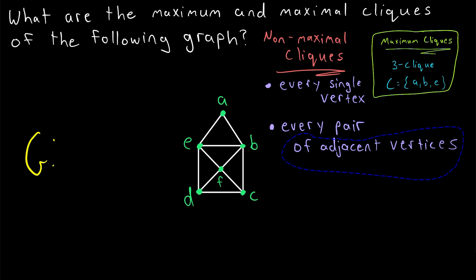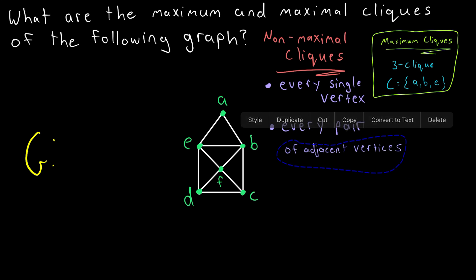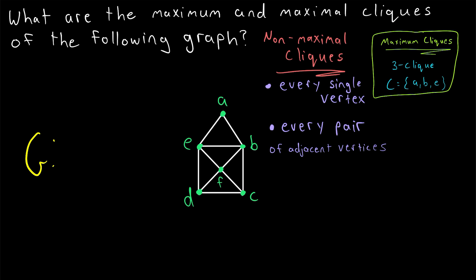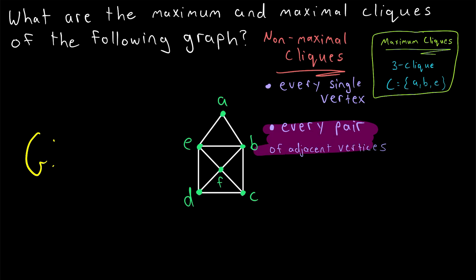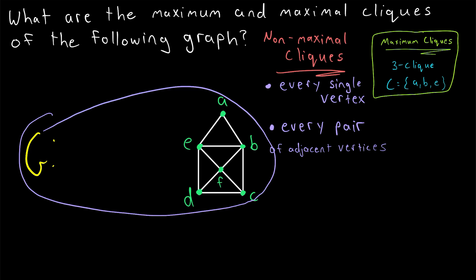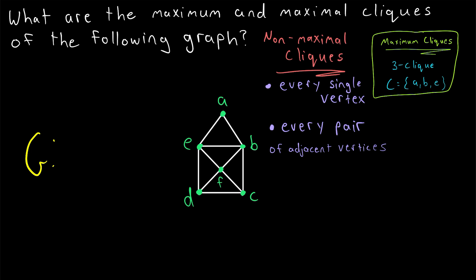And now we have identified all of the non-maximal cliques of this graph, because we have addressed every clique with one vertex and every clique with two vertices. In this graph, if a clique has three vertices, then it is a maximum clique, and thus we're positive that it can't be extended, so it's got to be maximal. So in this particular graph, the only maximal cliques are the ones that have three vertices, which also happen to be maximum cliques. But that, of course, will not always be the case.